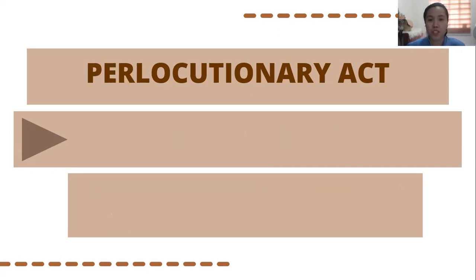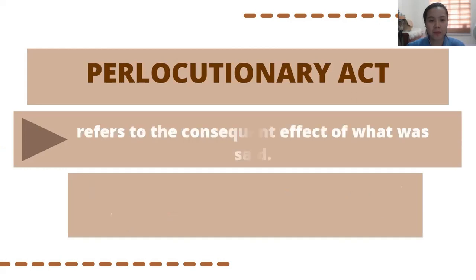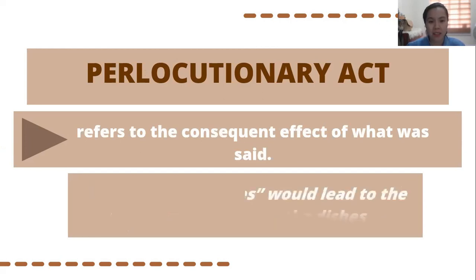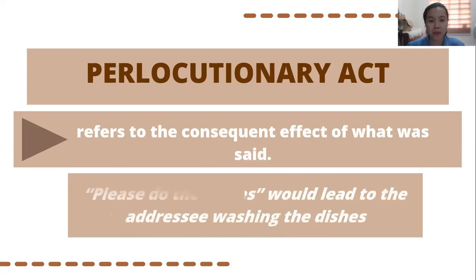The last type is perlocutionary act. It refers to the consequent effect of what was said. This is the response or the effect of the utterances. For example, 'Please do the dishes' would lead to the addressee washing the dishes. The aim of perlocutionary act is to change feelings, thoughts, or actions.